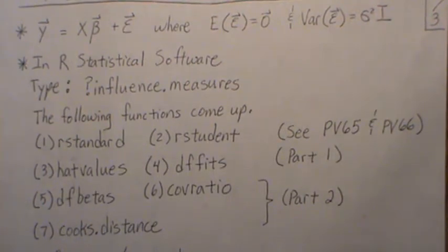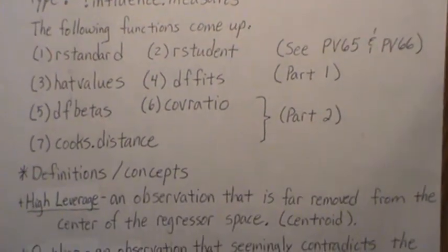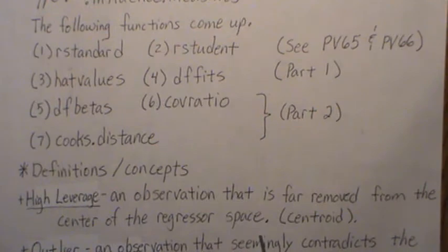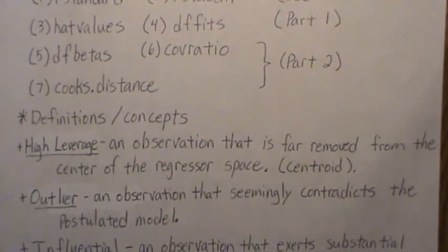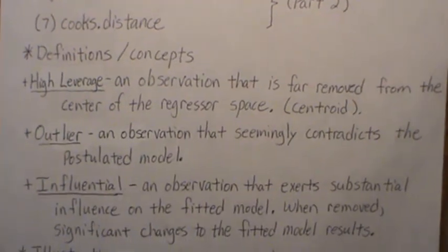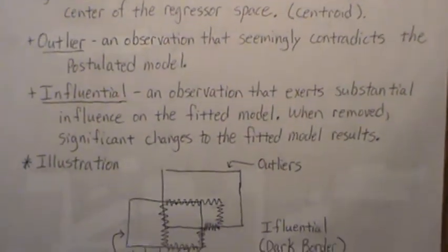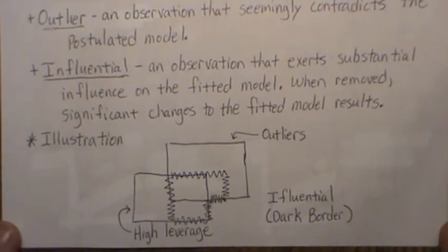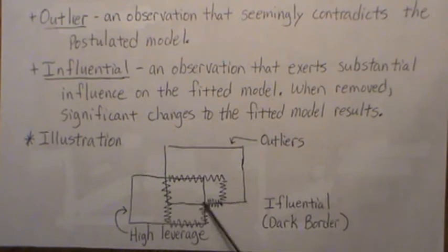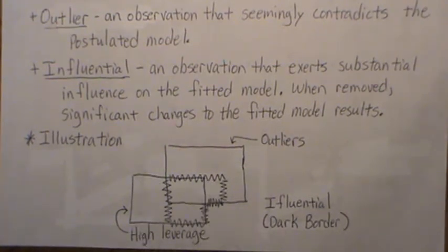Here are some definitions. A high leverage observation is one that is far removed from the center of the regressor space. An outlier is an observation that seemingly contradicts the postulated model. An influential observation is one that exerts substantial influence on the fitted model — when removed, significant changes to the fitted model result. Here's a Venn-like diagram showing how we classify each of these observations.